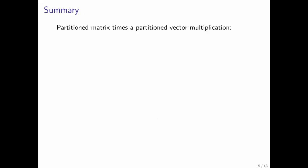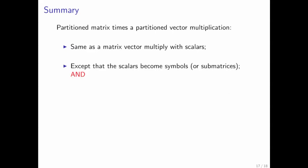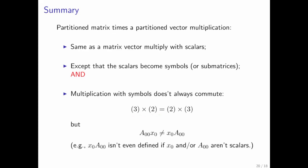Partitioned matrix times a partitioned vector multiplication is exactly the same as a regular matrix vector multiplication with scalars. Except that the scalars become symbols or sub-matrices, and it's very important that multiplication with these symbols doesn't always commute. For scalar multiplication, you can do 3 times 2, which is the same as 2 times 3. But it's not the case in general that a matrix times a vector is the same as a vector times a matrix.